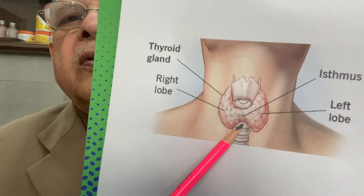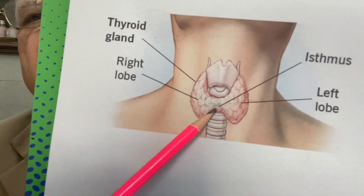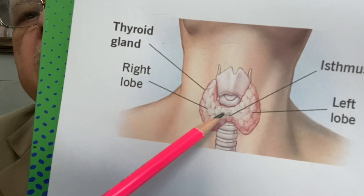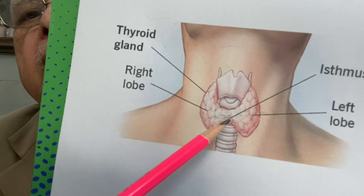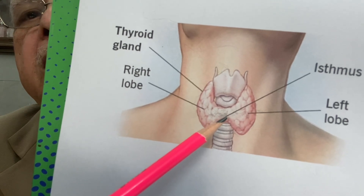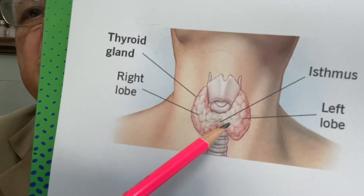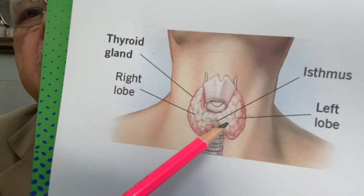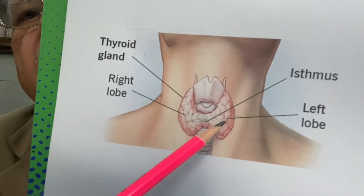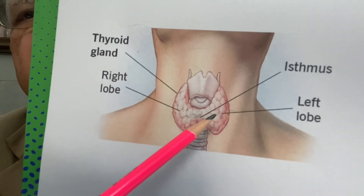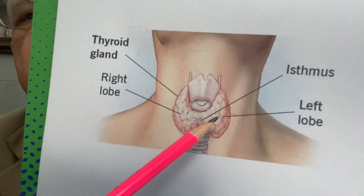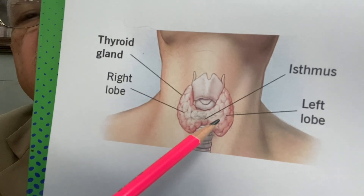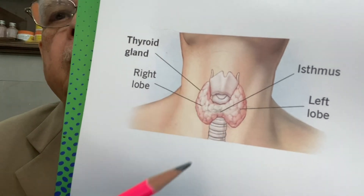The gland produces a hormone which regulates glucose and other metabolism of the body. If you want to know the details, see my video which I uploaded today on YouTube. Thank you.